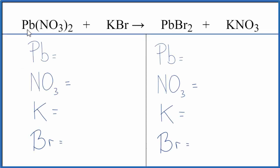In this video, we'll balance the equation for Pb(NO₃)₂ plus KBr, that's lead two nitrate plus potassium bromide. Let's count the atoms up.